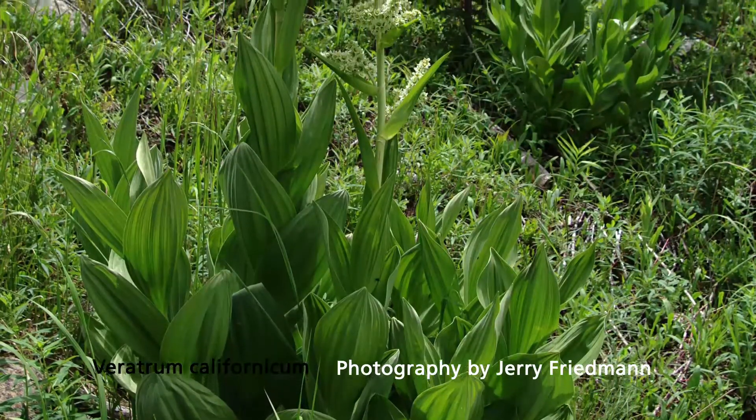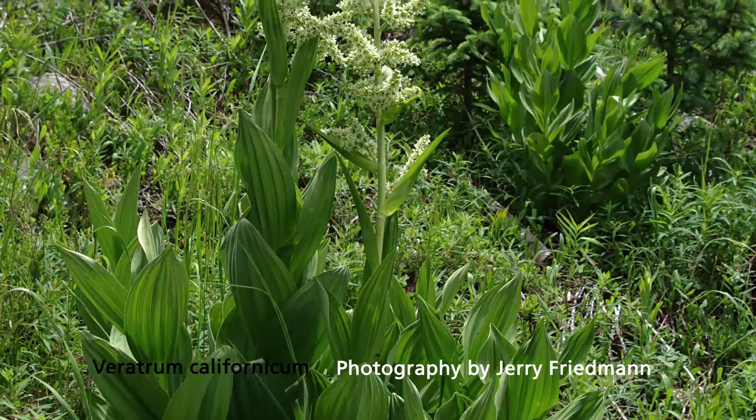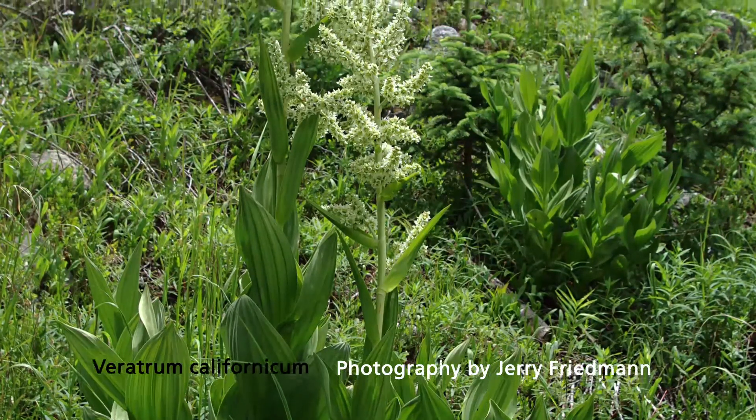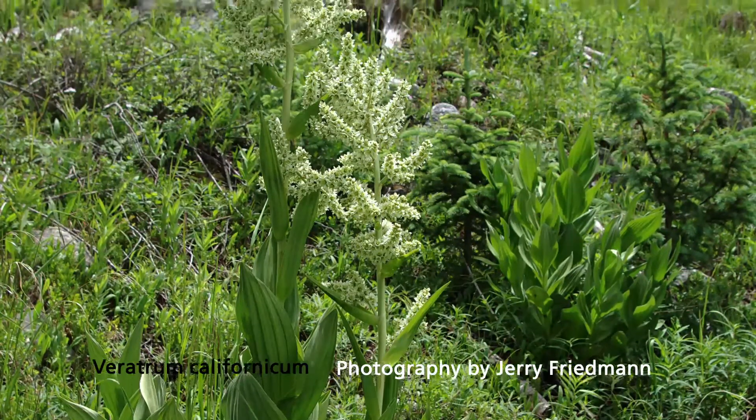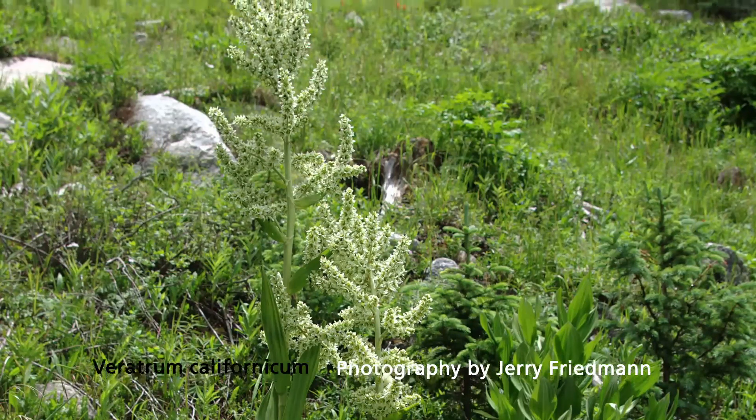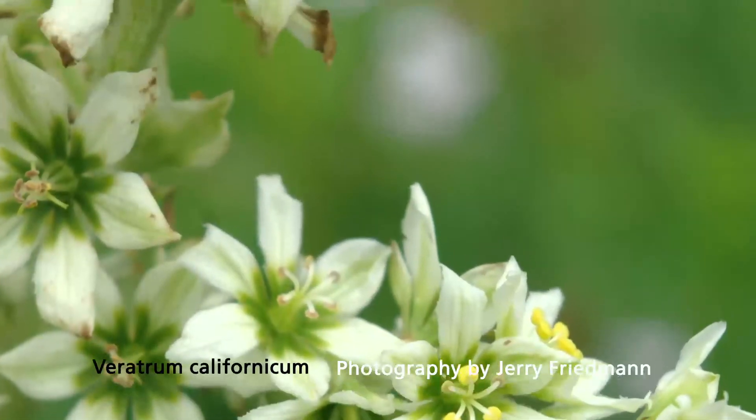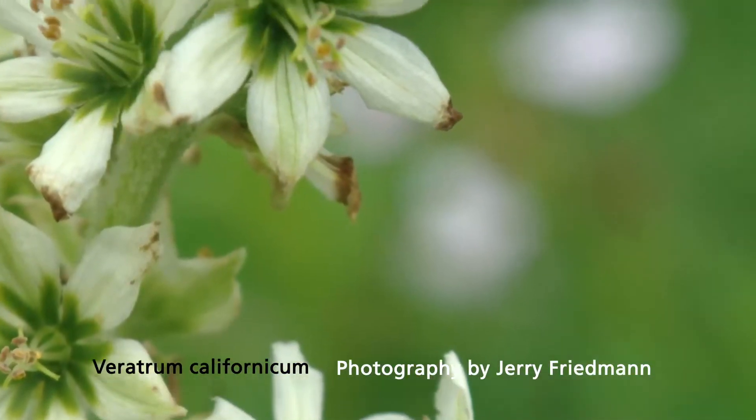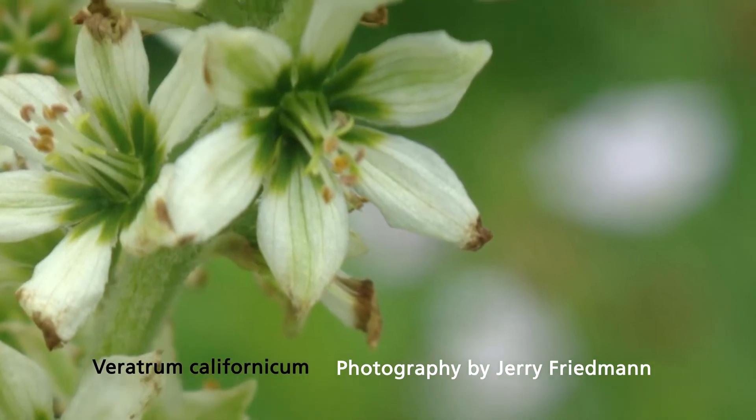In 1959, Binns and co-authors reported on congenital cyclopean-type malformations in lambs caused by maternal ingestion of the range plant Veratrum californicum. The plant, also known as false hellebore, wild corn, and skunk cabbage, is shown here.